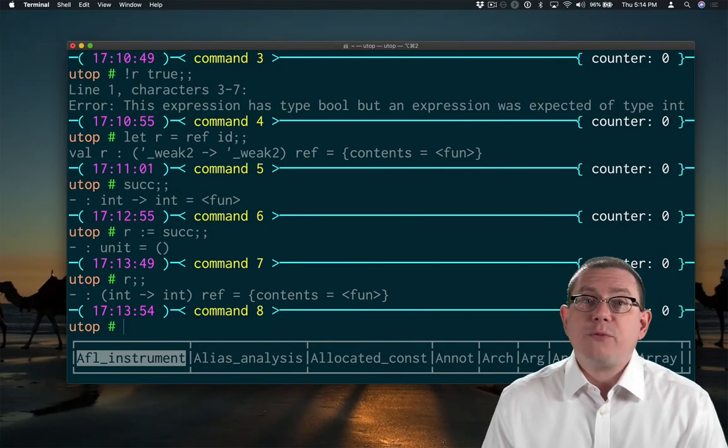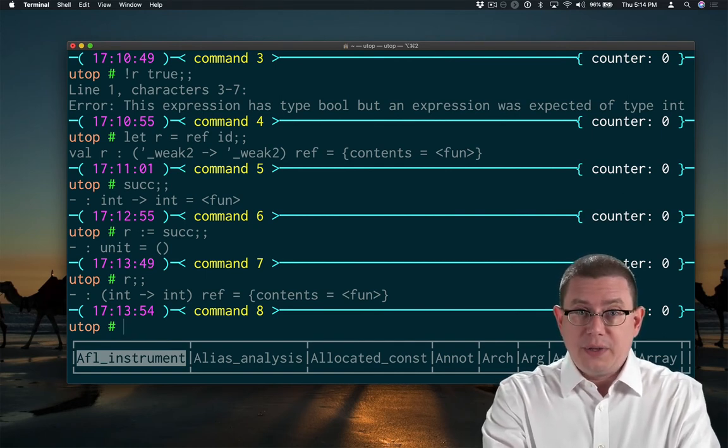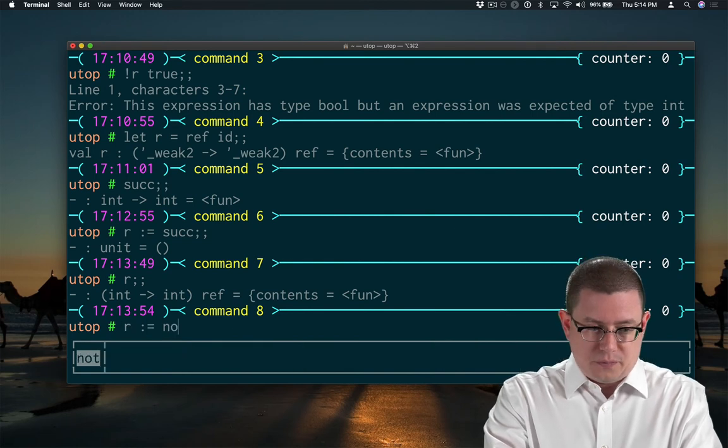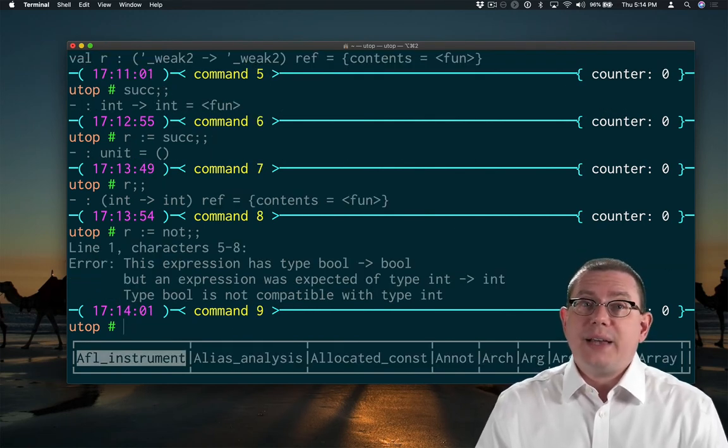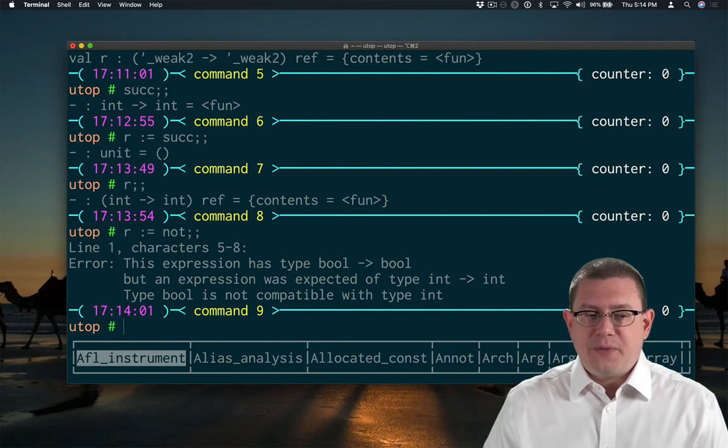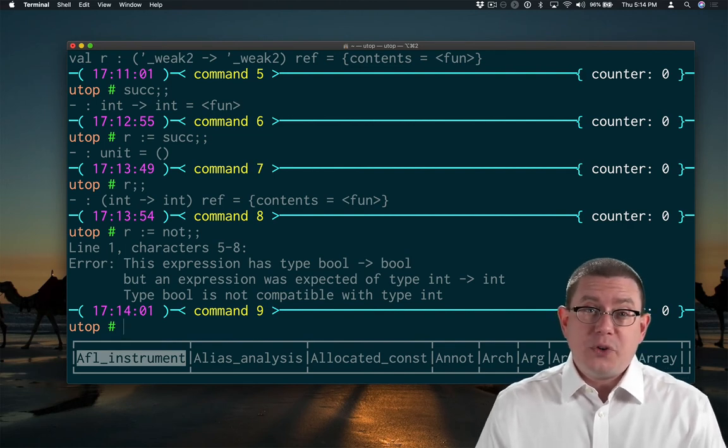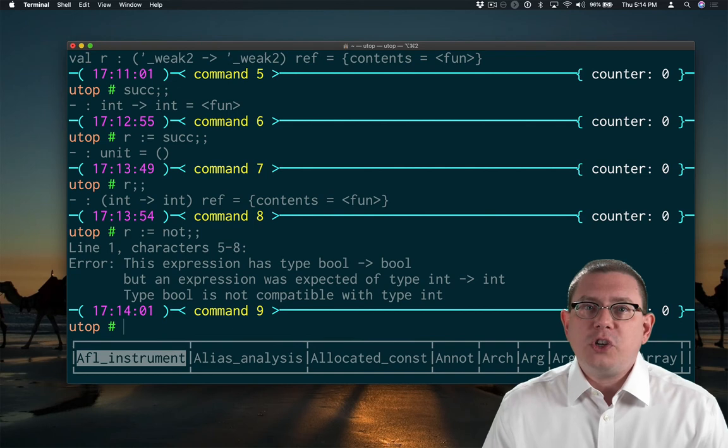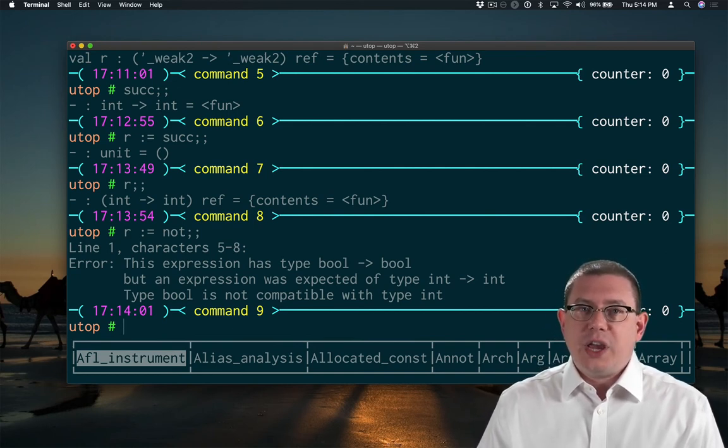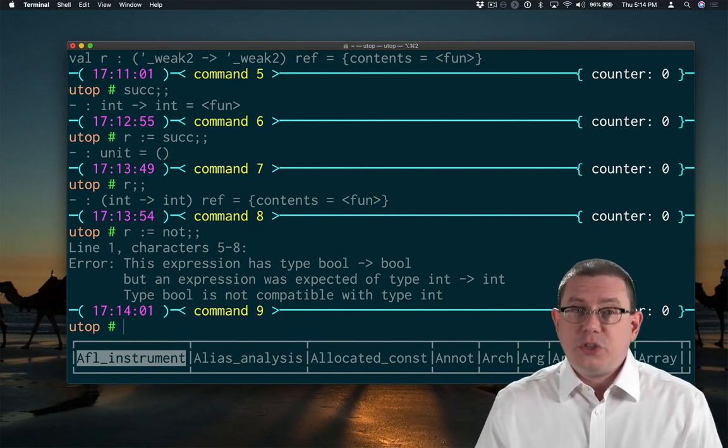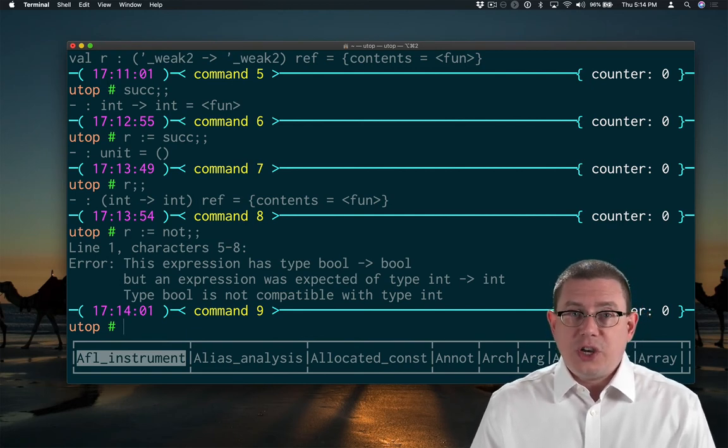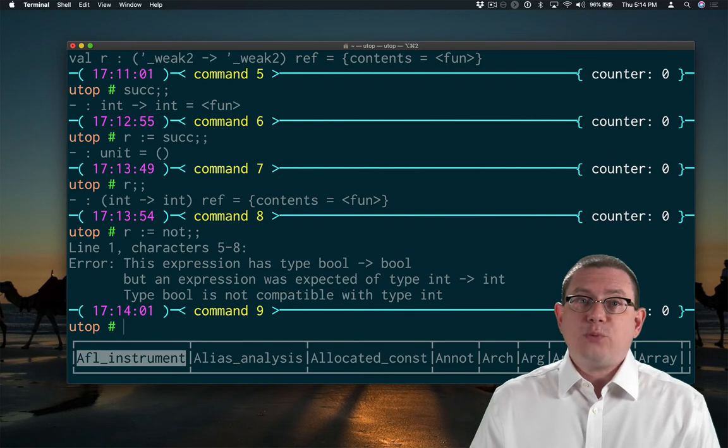And from now on, we're never allowed to stick a different type of function in there. So we couldn't stick a bool arrow bool function in there, for example. That doesn't work, because not has type bool arrow bool, not int arrow int. So it kind of looks like the type of r is changing when we do that mutation. And there is a small sense in which it is. It's that there was an unknown type before, when we hadn't yet instantiated that weak type variable. But when we do the mutation to store successor inside of r, then that weak type variable gets instantiated. It's finally known, and that's what we used from now on.